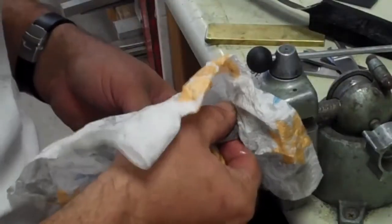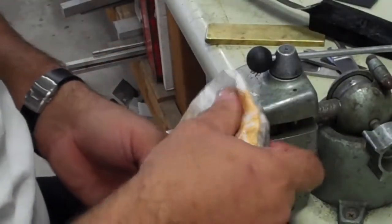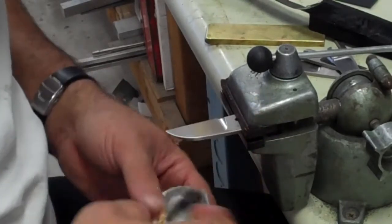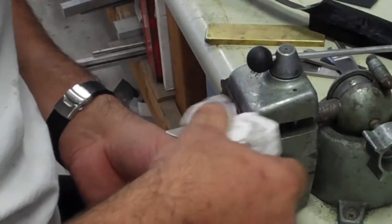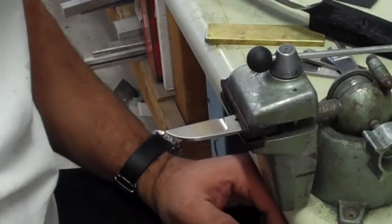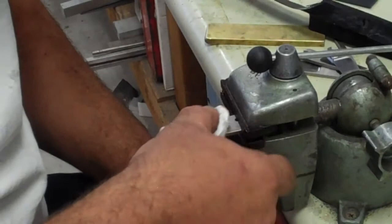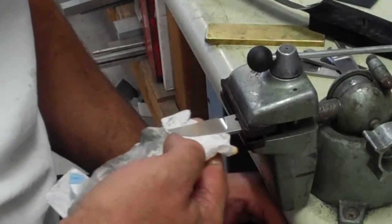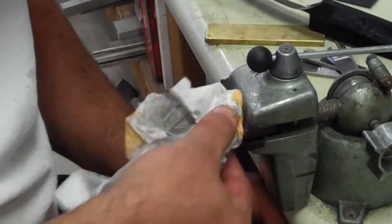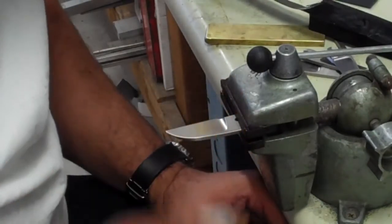Take a look. The ATS doesn't clean up as nice as the CPM 154 does. I can look in there and I can see some of the carbide formations and stuff in the steel. With the CPM material, which is my typical steel, I just don't see that. I think that's as good as I'm going to be able to get.